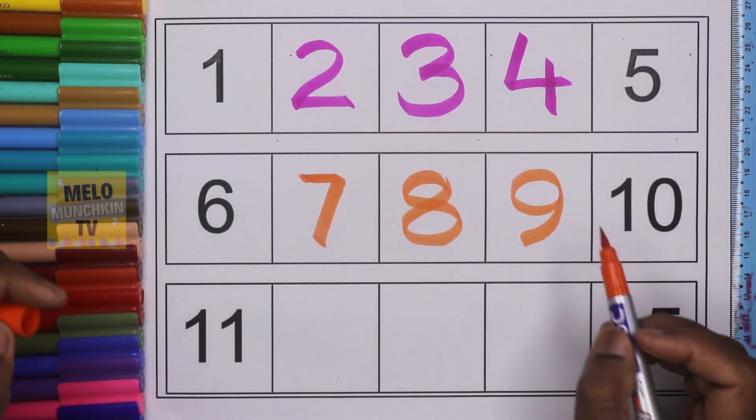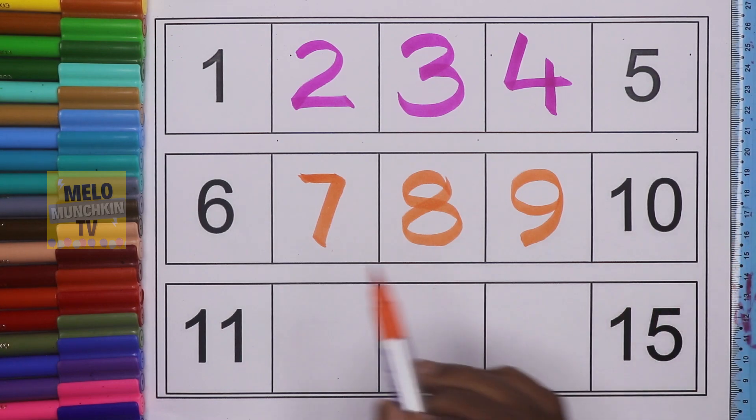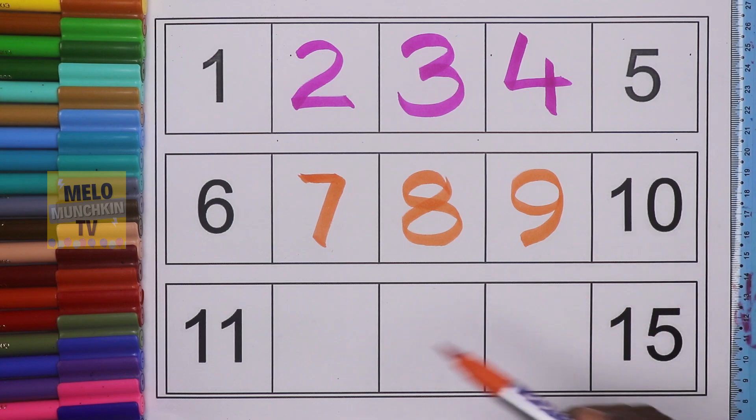N-I-N-E, nine. Okay, so we have our missing numbers: 7, 8, and 9. Let's come to the third line.